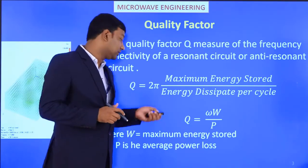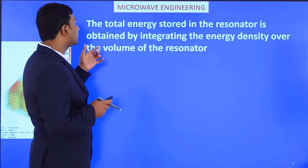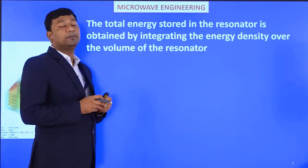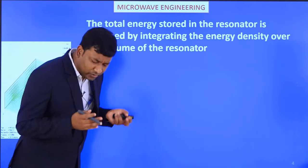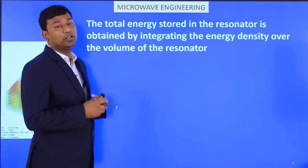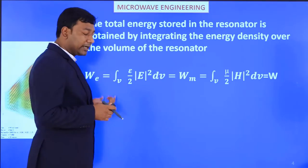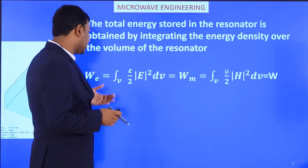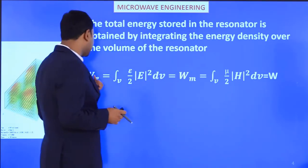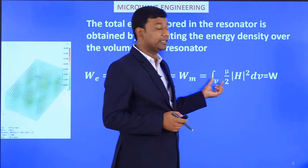We will now calculate W. The total energy stored in the resonator is obtained by integrating the energy density over the volume of the resonator. For a particular cavity resonator, there are two things we can consider: either the electric field intensity or the magnetic field intensity.